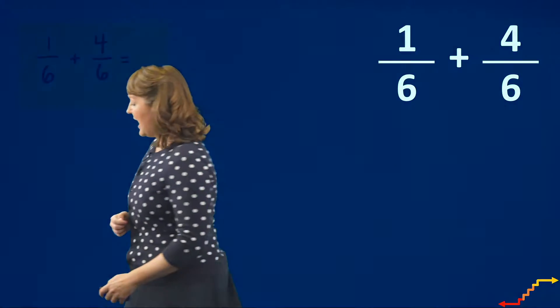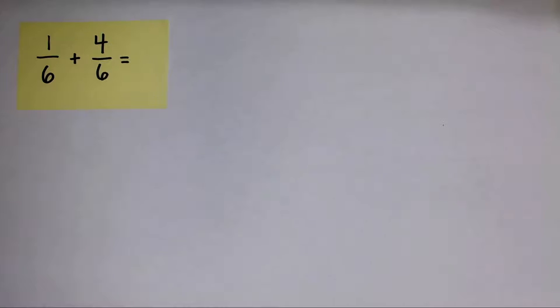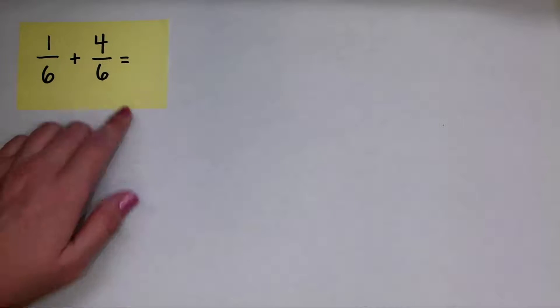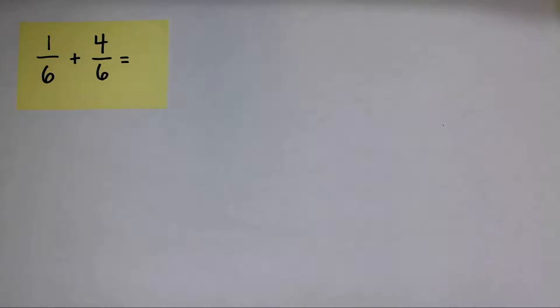So remember I said we are going to add 1 sixth plus 4 sixths. So I have my problem written right here. When we're adding, it's always really good to show the abstract form of the numbers.